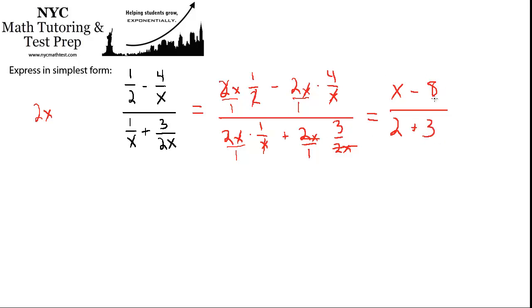x minus 8, we have to leave just the way it is. 2 plus 3, we can certainly do. So our final answer will be x minus 8 over 5. And that's it.